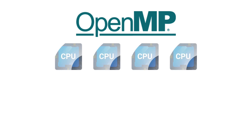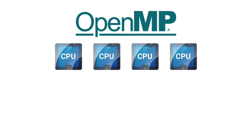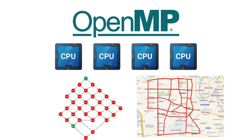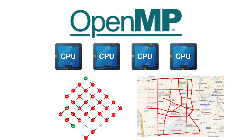Our solution: parallelise Dijkstra's algorithm using OpenMP. By distributing tasks across multiple processes, we divide the workload, enabling simultaneous updates and faster computations. This parallel approach is crucial for handling large-scale networks efficiently.